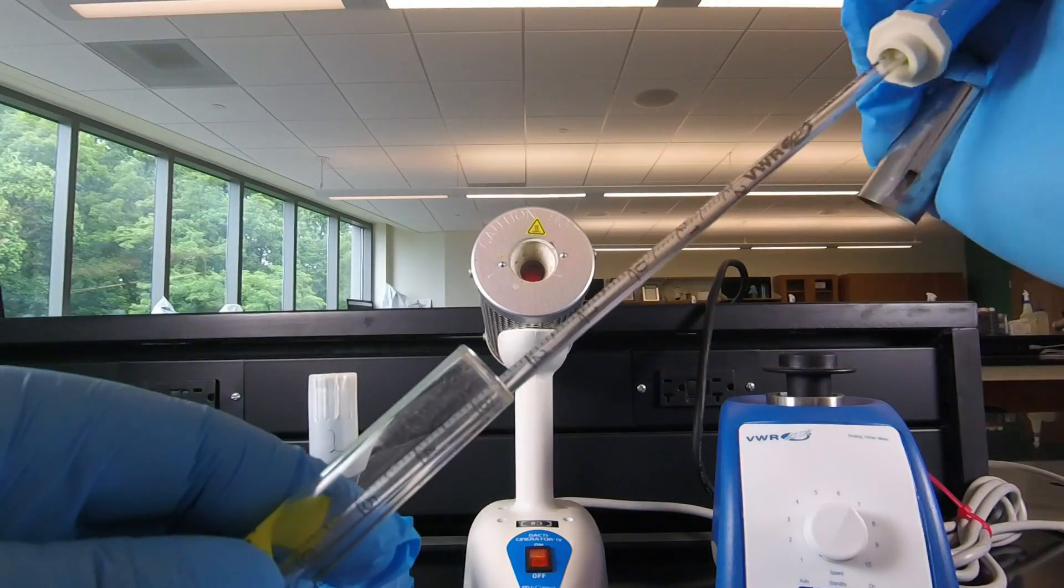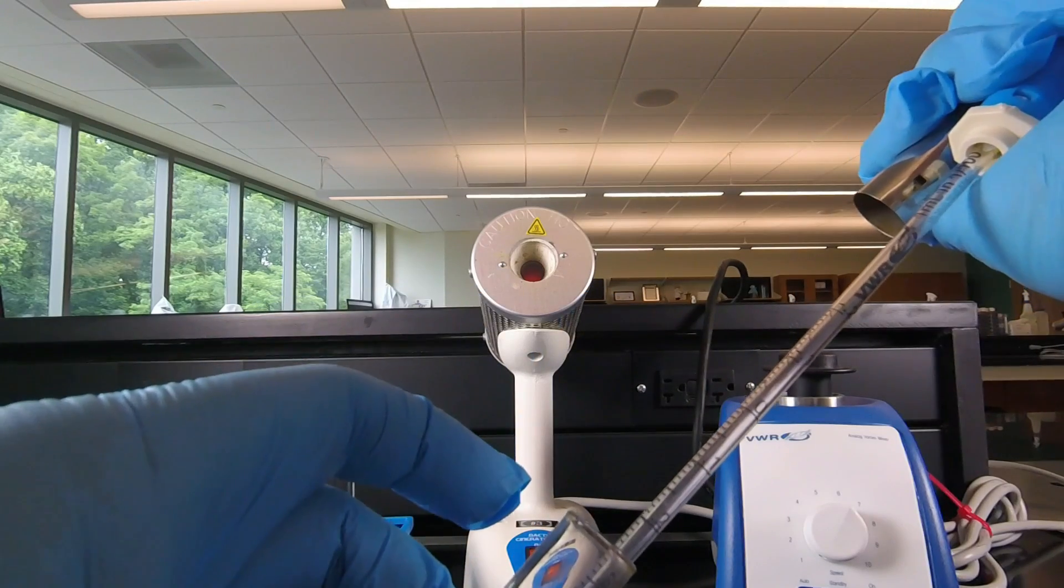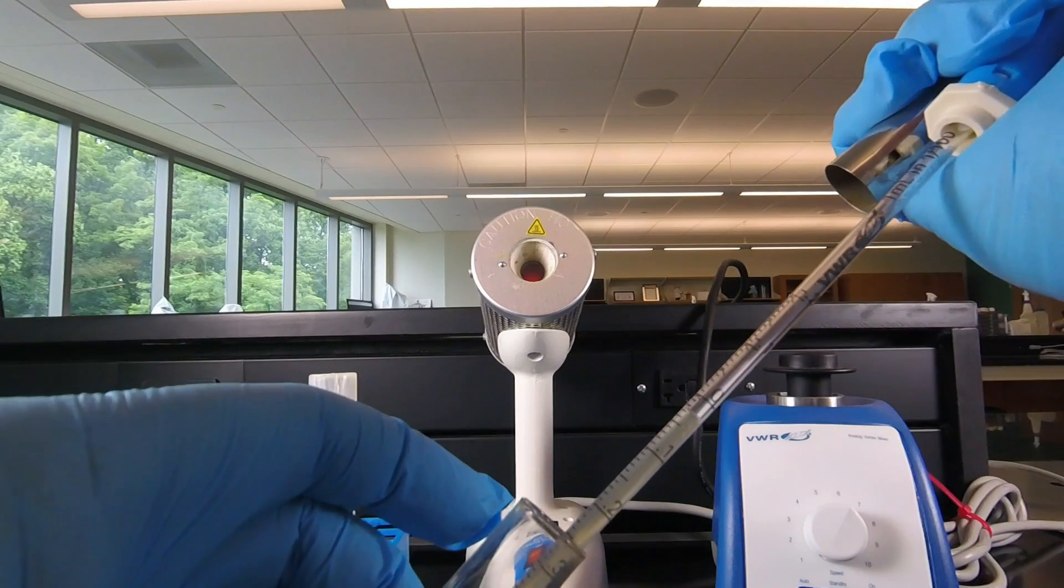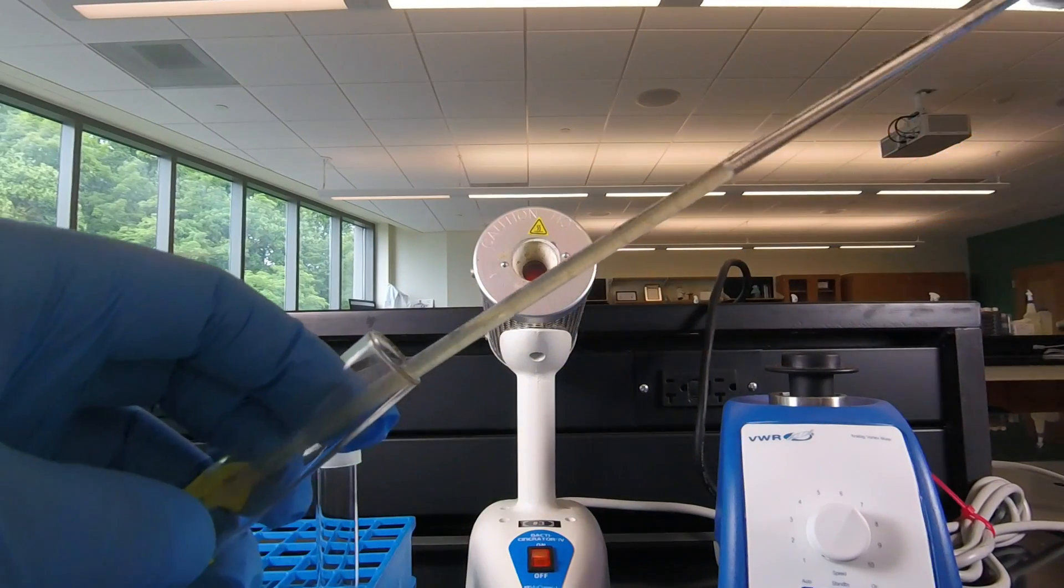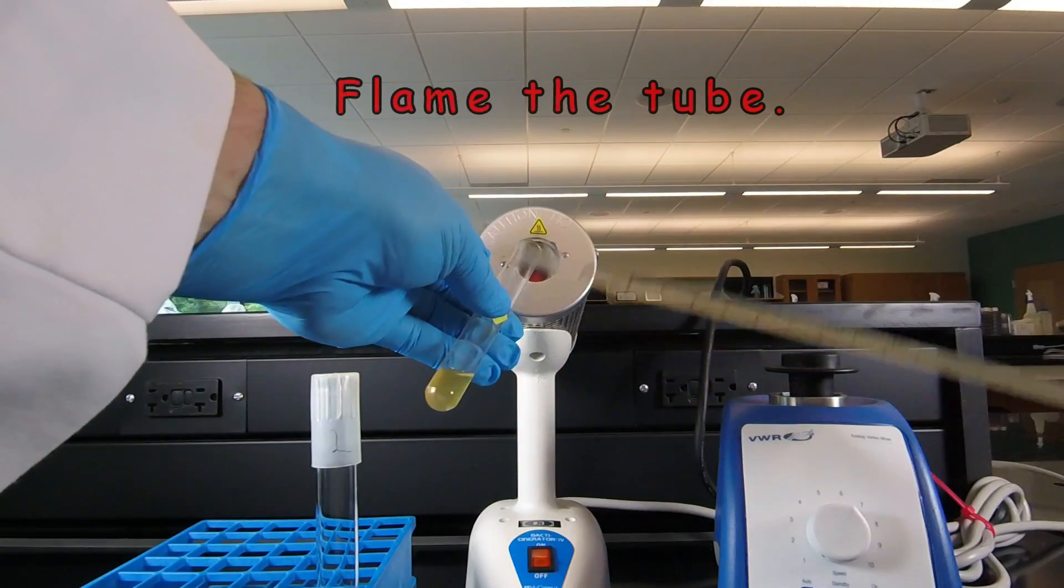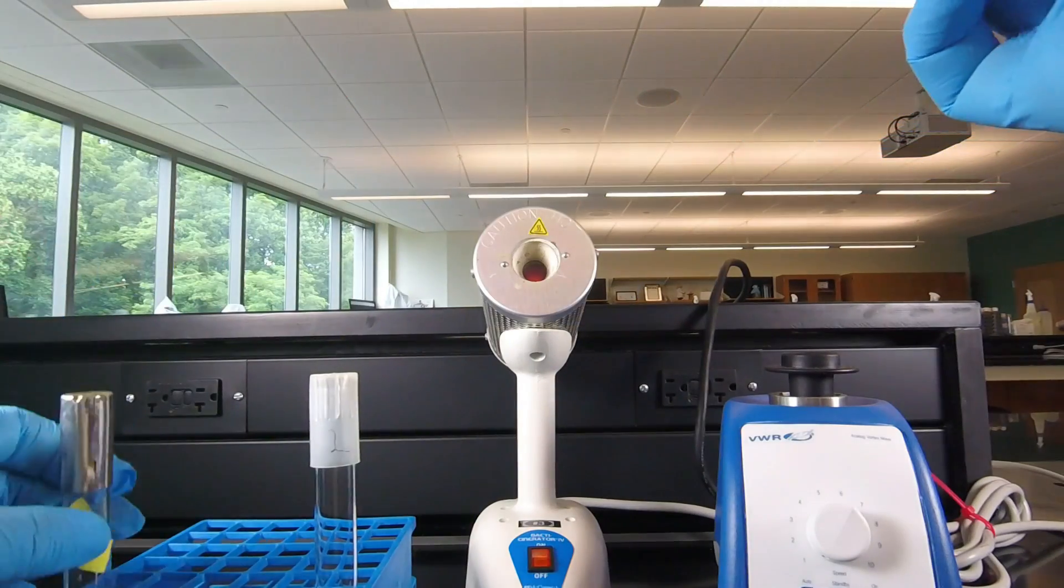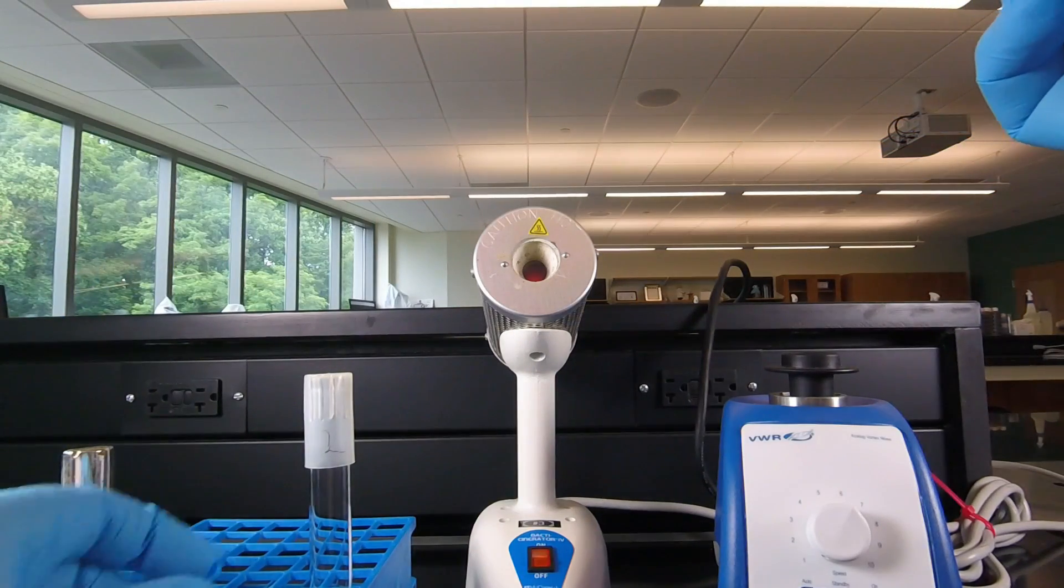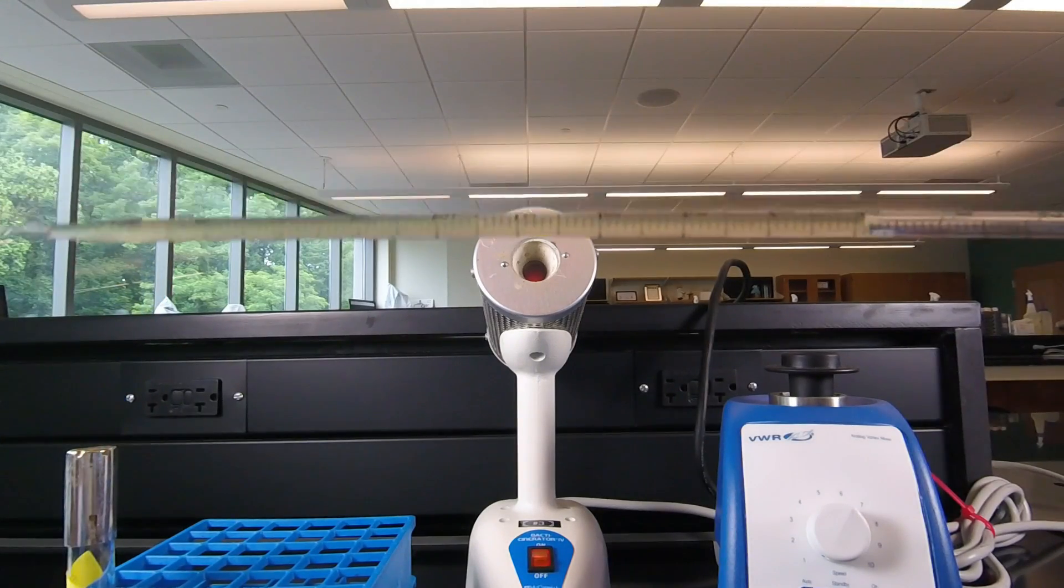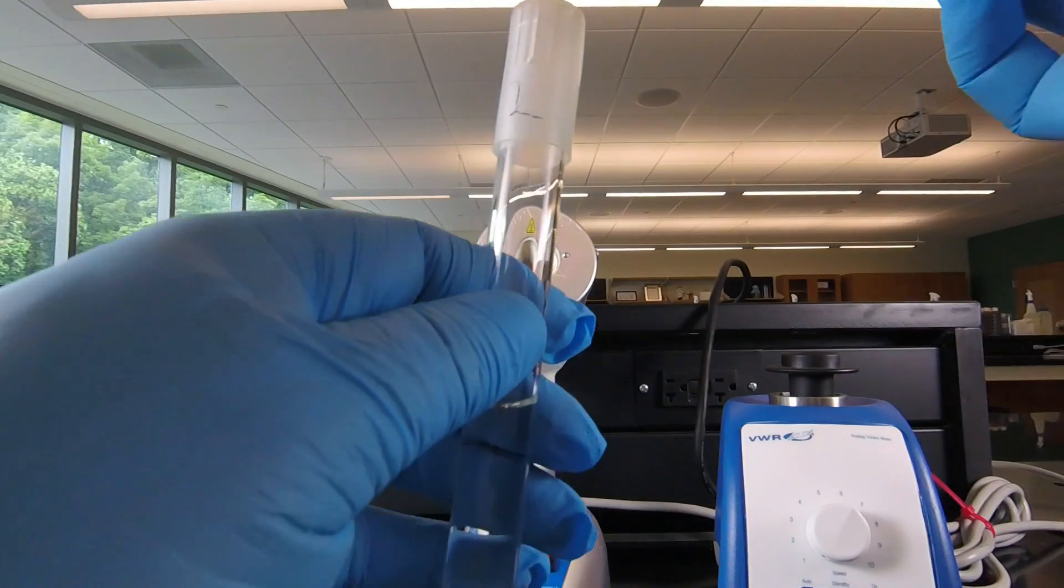We're going to remove one milliliter of the bacteria by drawing it up to the zero on the pipet by turning the knob downwards. And now we have our one mill out. And then we flame the tube, we put the cap back on and we are ready to transfer the bacteria to the next tube. Now if you keep the pipet horizontally there's less chance of dripping too. So kind of keep it horizontal while you're doing that.